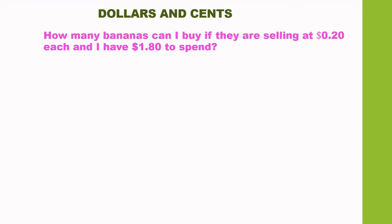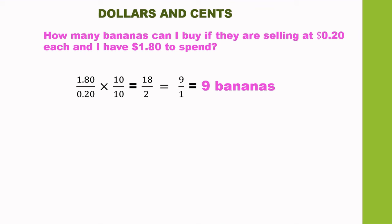How many bananas can I buy if they are selling at 20 cents each and I have $1.80 to spend? We are going to divide $1.80 by 20 cents. Our 0.2 must be converted to a whole number — that is the denominator. We multiply by 10 so that we have 2. Then we do the same to the numerator: 1.8 times 10 gives us 18. 18 divided by 2 gives us 9. So I can buy 9 bananas.